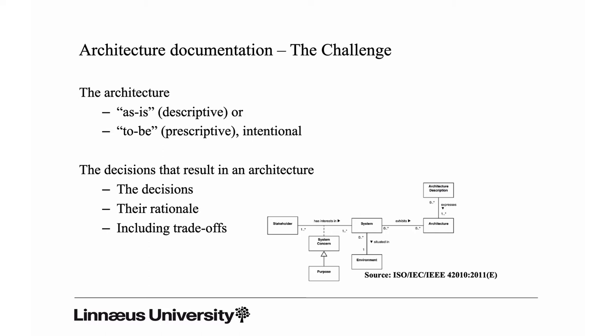Remember: we have a descriptive architecture — that is the true architecture — but we can also use architecture prescriptively to communicate how we would like the architecture to be, because that's how we achieve the qualities we want. Descriptive and prescriptive are both important. The system exhibits an architecture, and the description expresses the architecture. The ISO standard takes both perspectives into account.